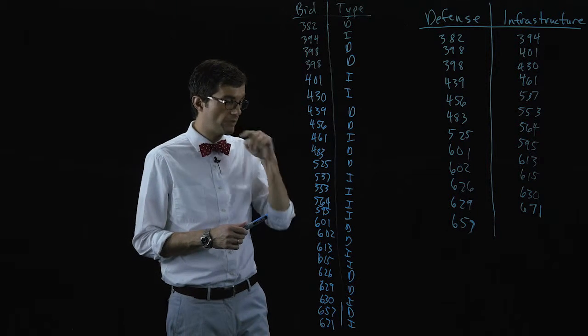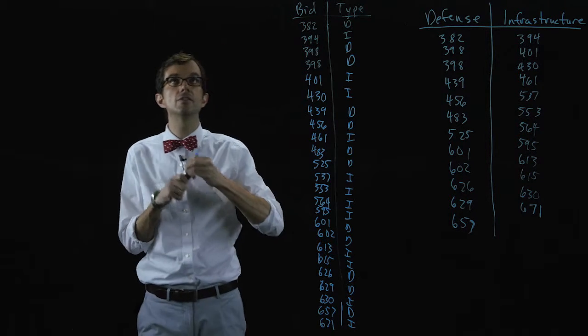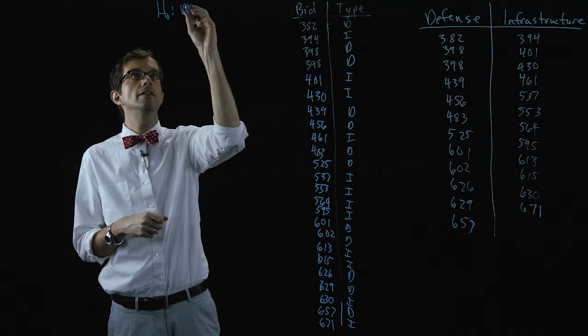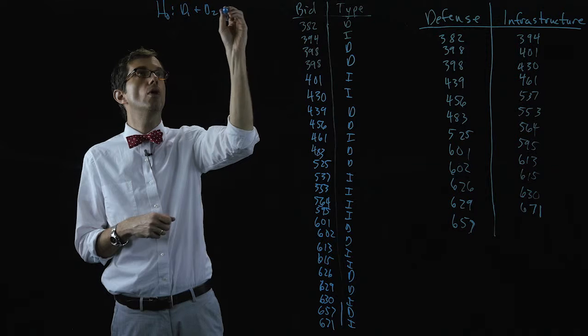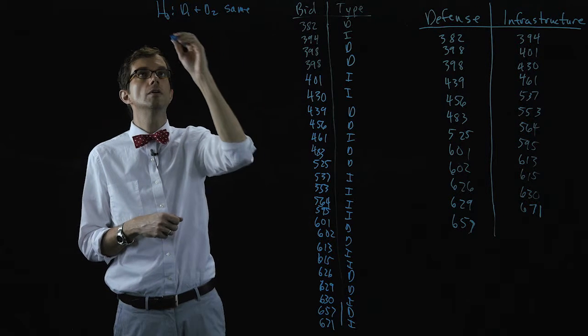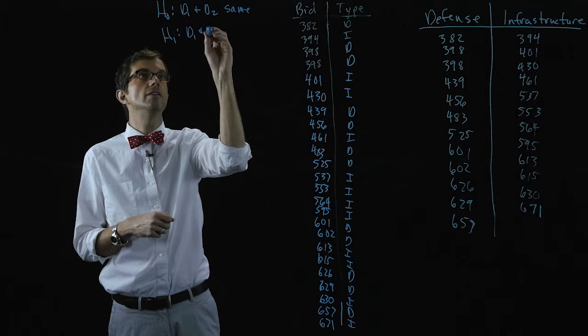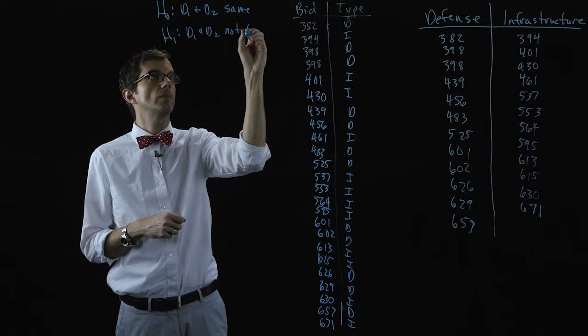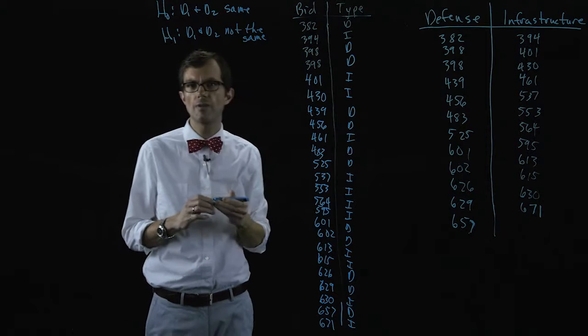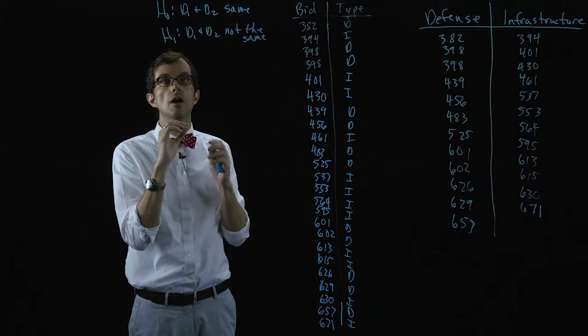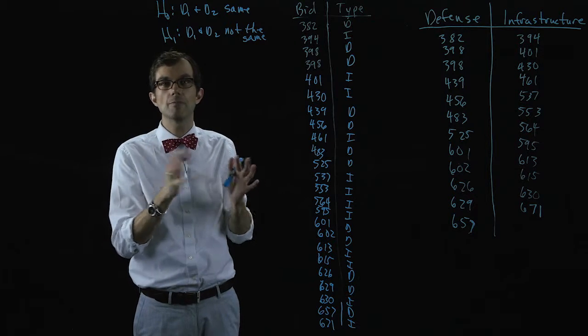And so what we want to do with the Wilcoxon rank sum test to address this hypothesis, d1 and d2 are the same versus d1 and d2 not the same. Here we're not wanting to specify whether one is bigger than the other, we're just wanting to know are they just not the same.